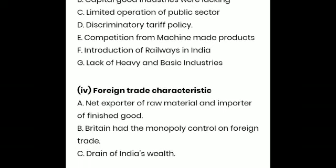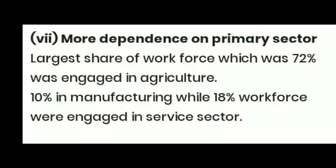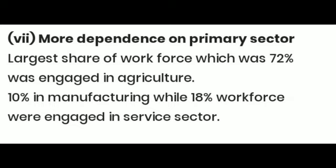Then we move to foreign trade and its characteristics. India had been turned into a mere exporter of raw material — instead of using these raw materials for manufacturing goods, India was exporting them and importing finished British goods. Britain had a monopoly control over India's foreign trade and did not allow India to maintain healthy trading relationships with other countries. In this way, Britain was draining away India's resources to feed the process of industrialization in their own country.